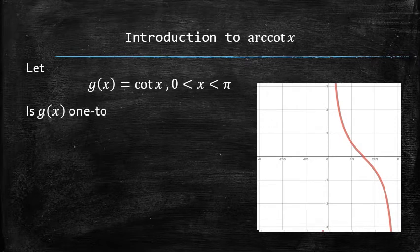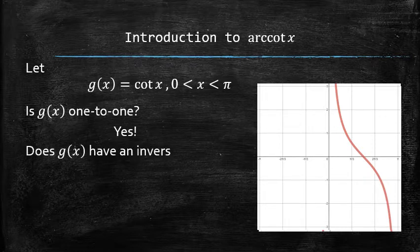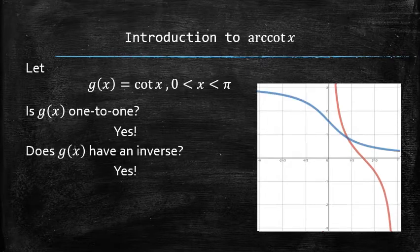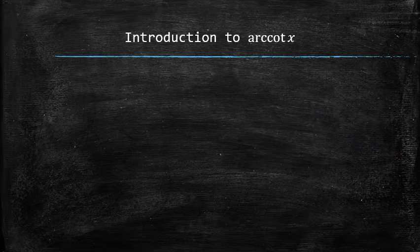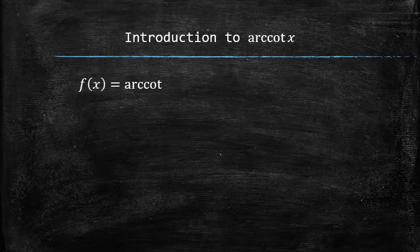Is this function 1 to 1? Yes, because it passes the horizontal line test. Does this function have an inverse? Also yes, because all 1 to 1 functions have inverse functions. And here's what it looks like. This function is not any of the functions that we already know, so we give it a name: the arc cotangent of x function. Let's take a look at this new function and its graph.